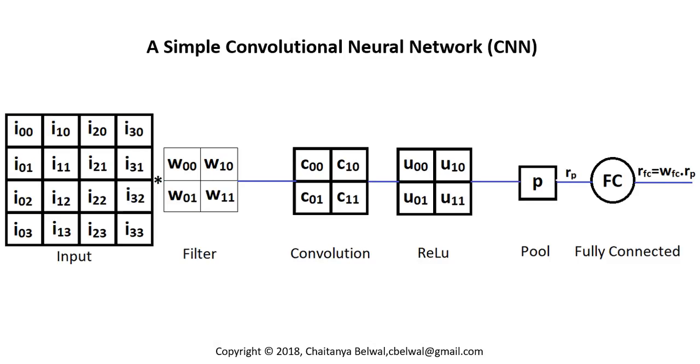What we are seeing in front is a simple CNN architecture that has a 4x4 input matrix which is convoluted with a 2x2 filter giving us a convolutional map which is again 2x2.